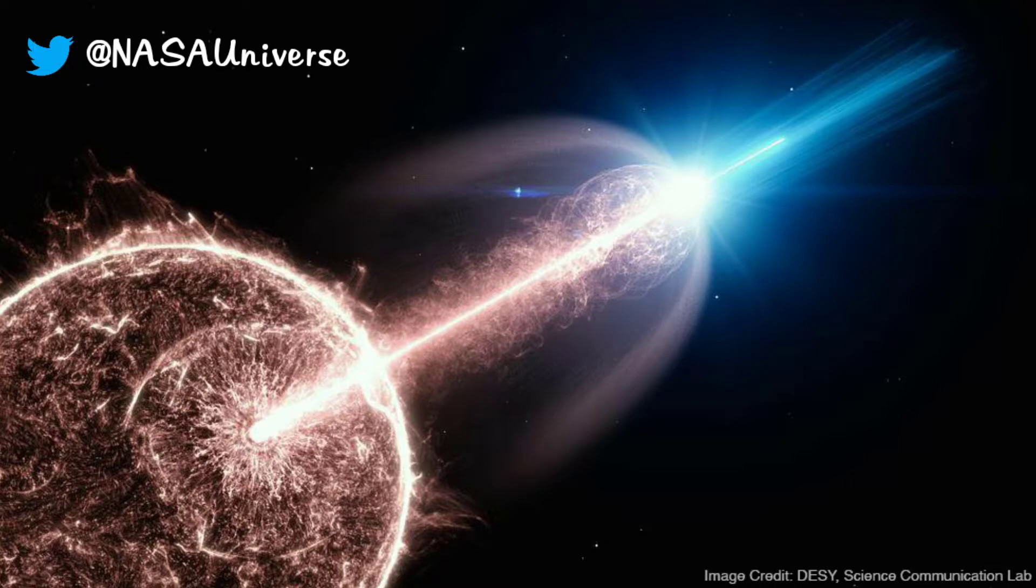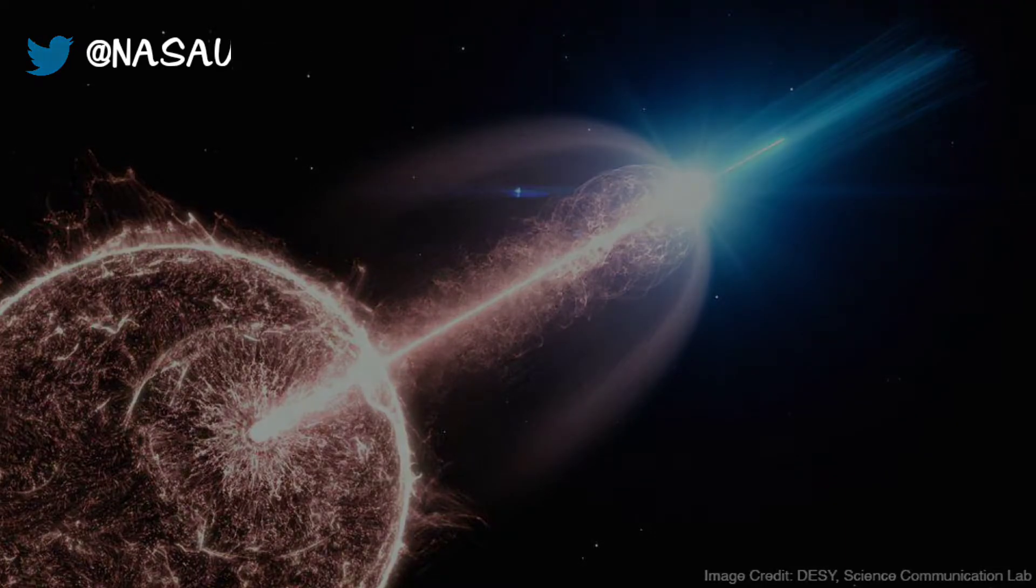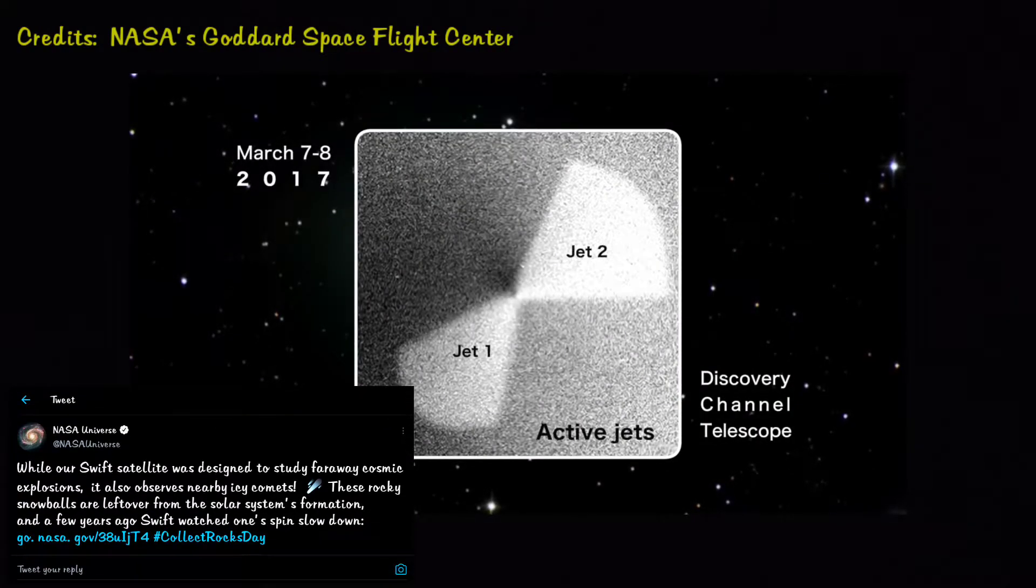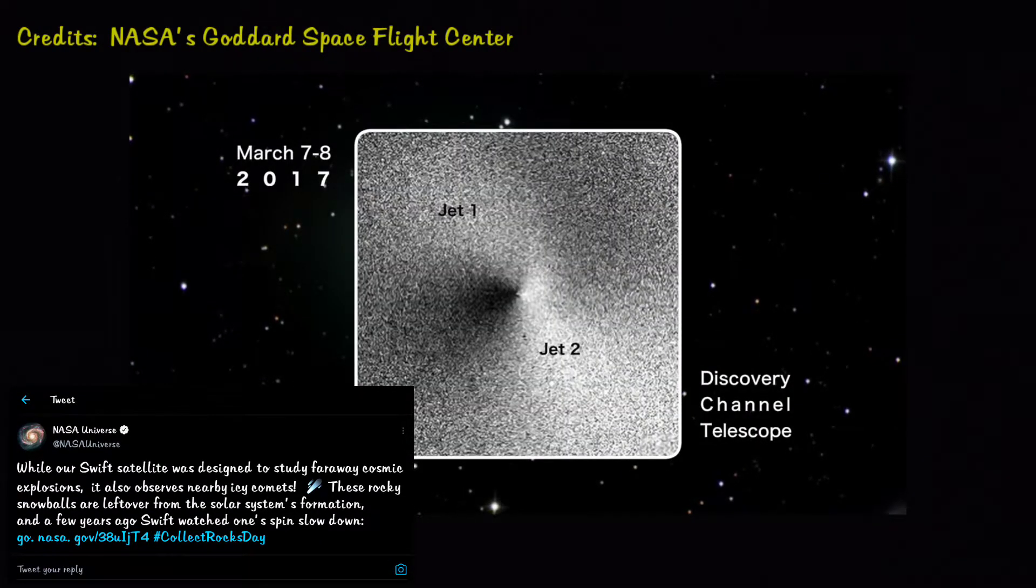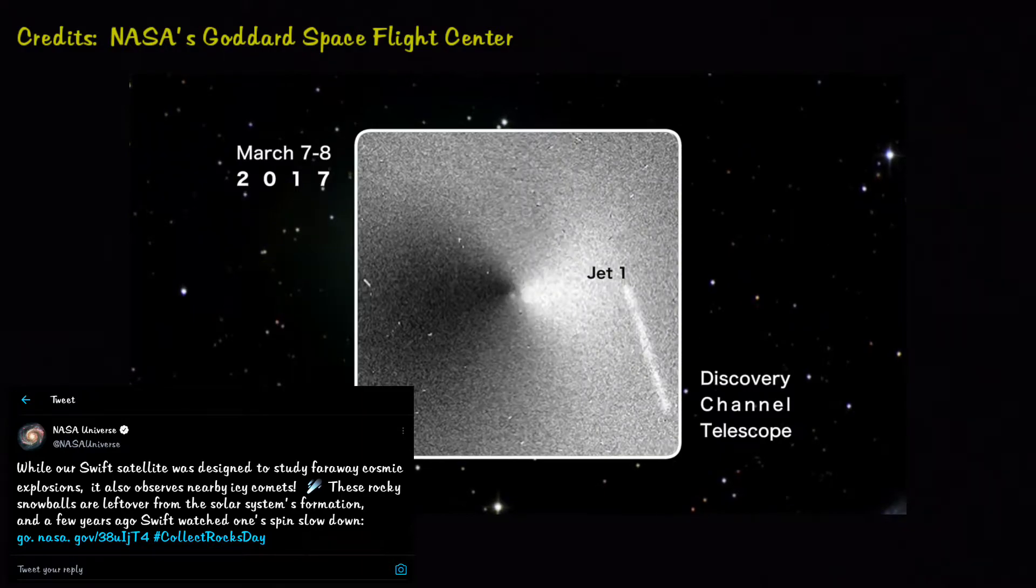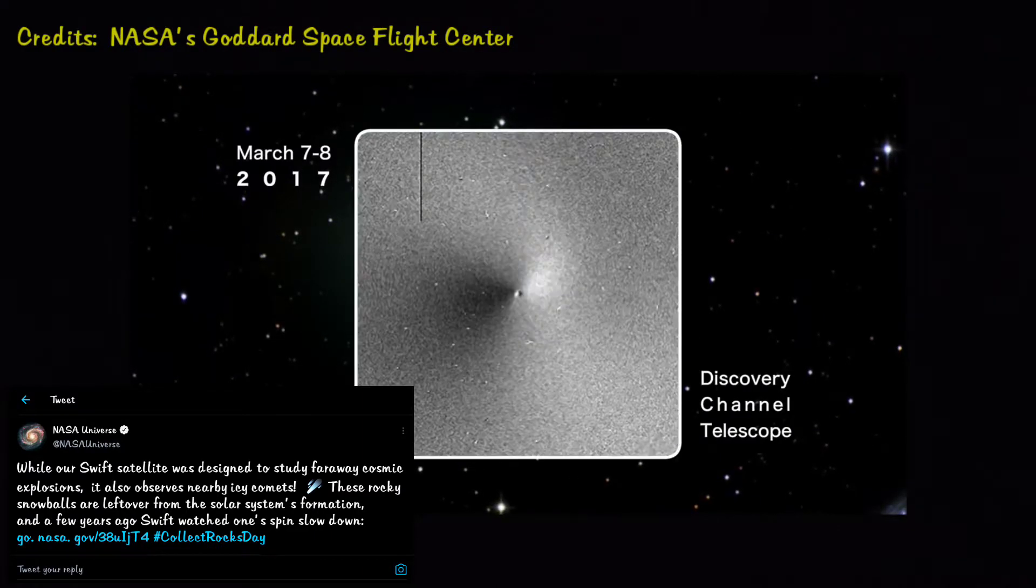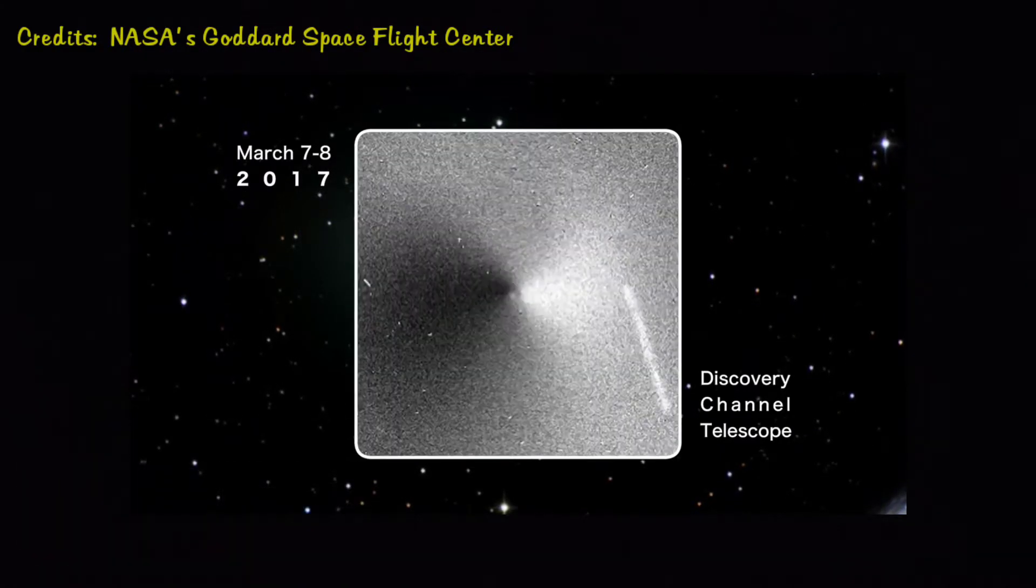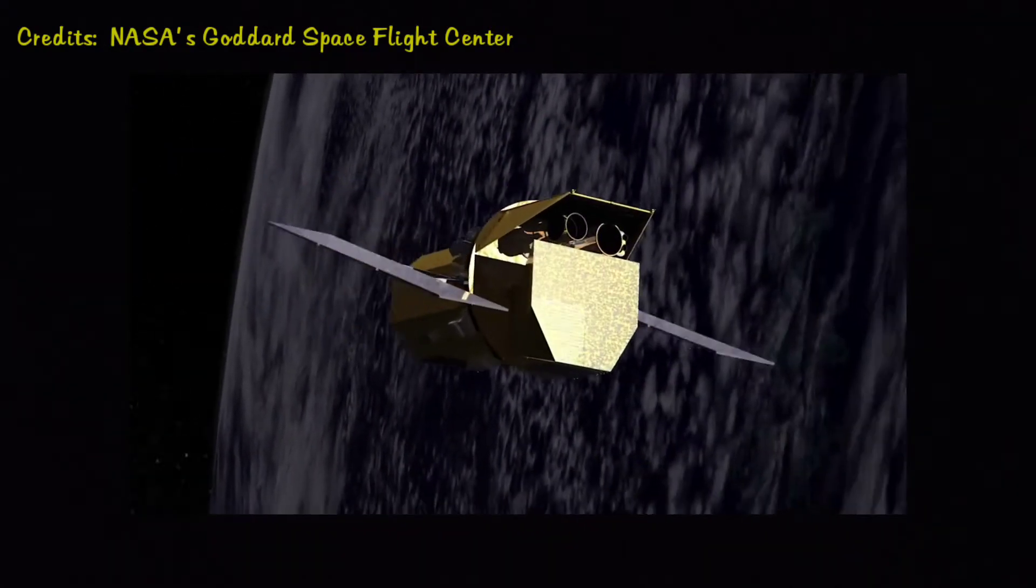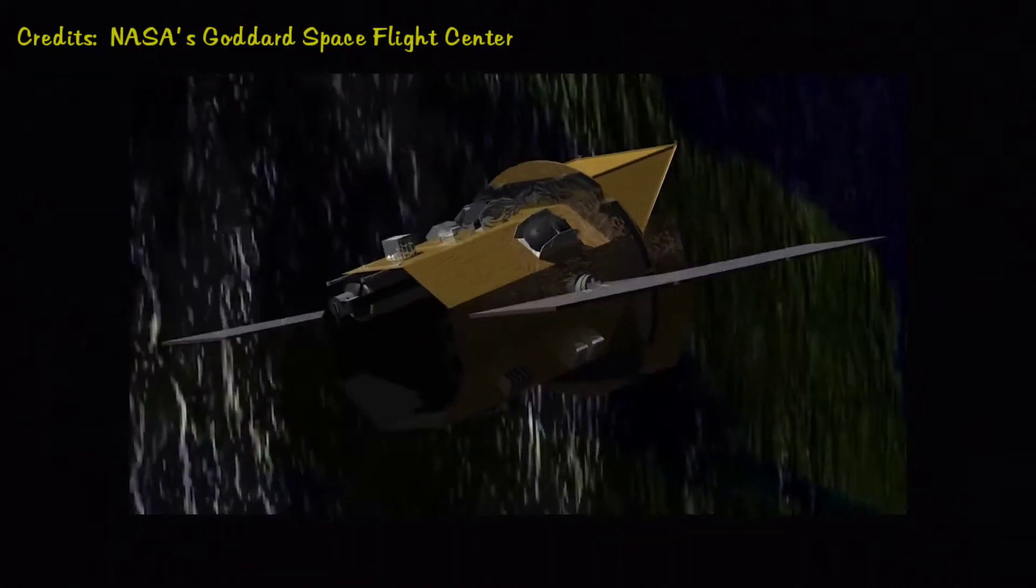Swift mission not only observed cosmic explosions but also icy comets. When comet 41P was spotted in 2017, astronomers found it to be rotating once every 20 hours. But when Swift observed it in May, the comet's rotation period was more than double.